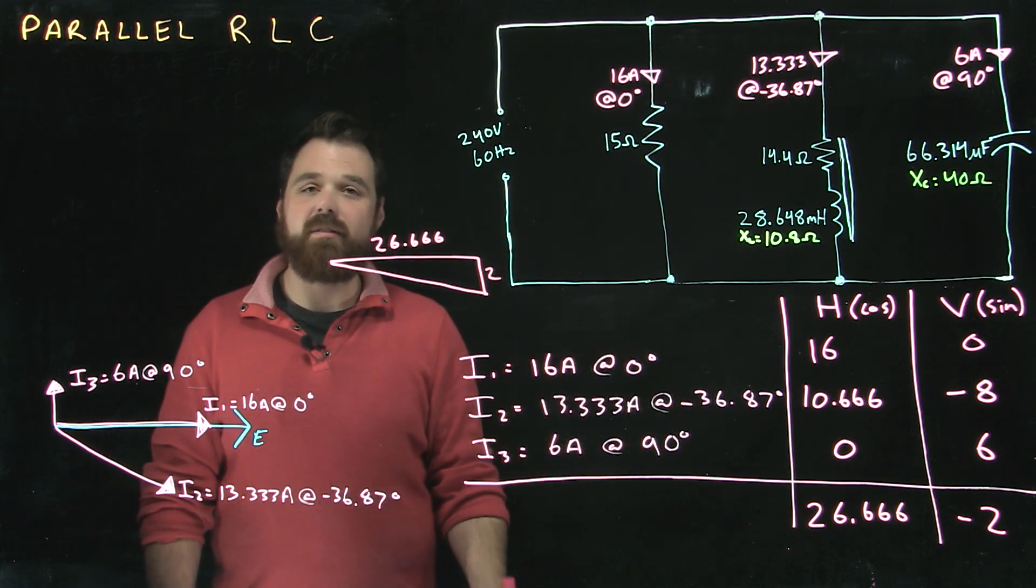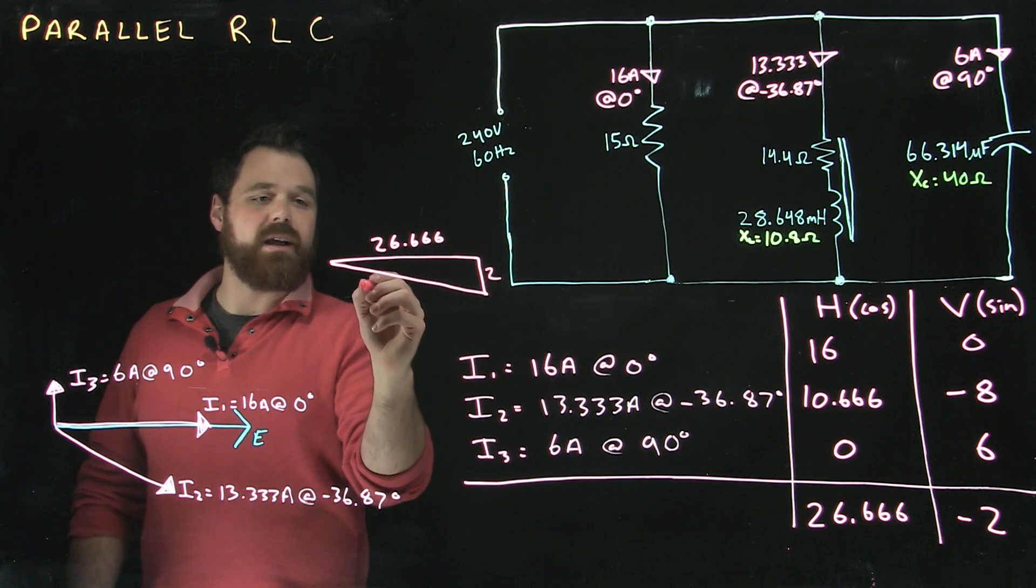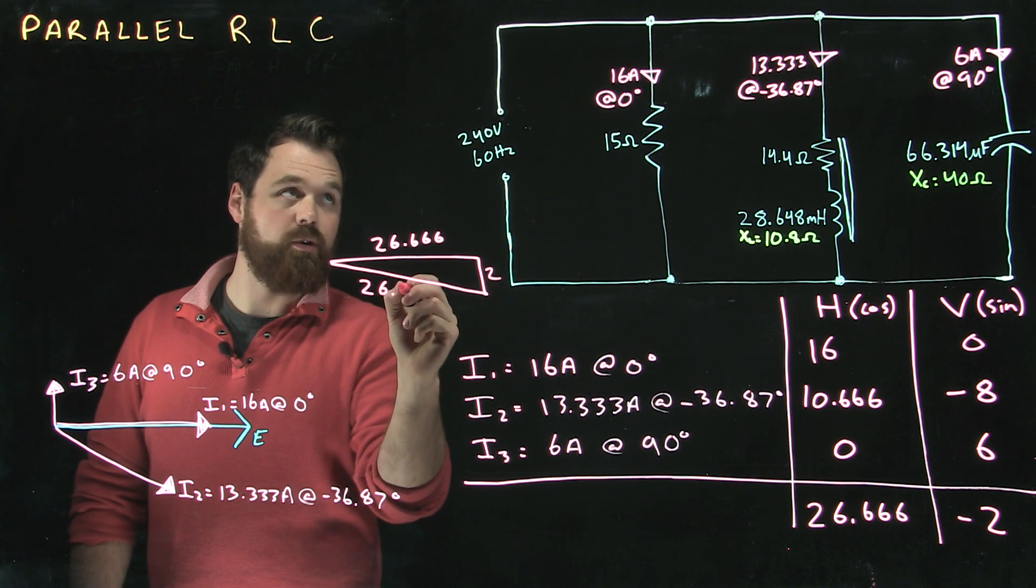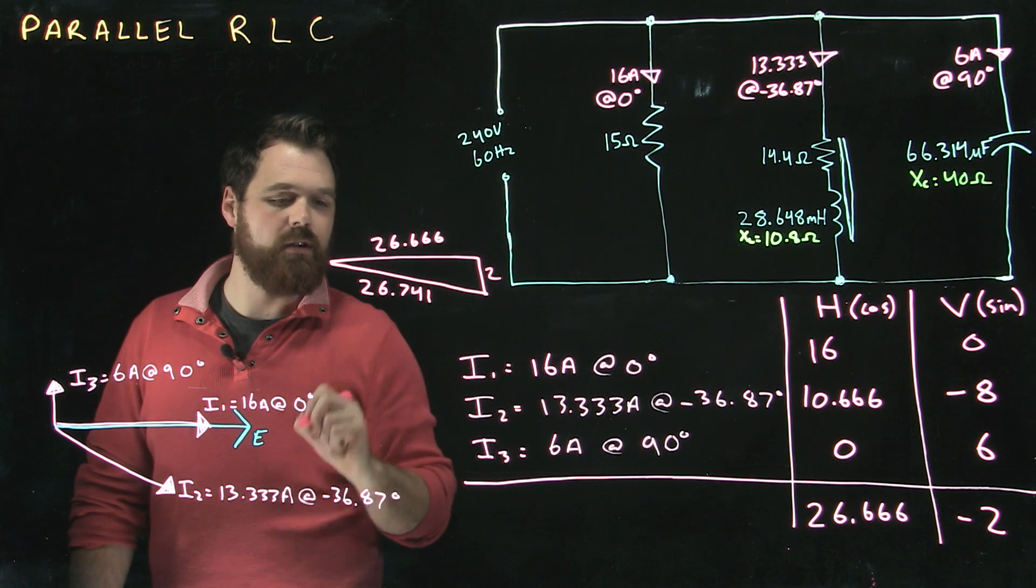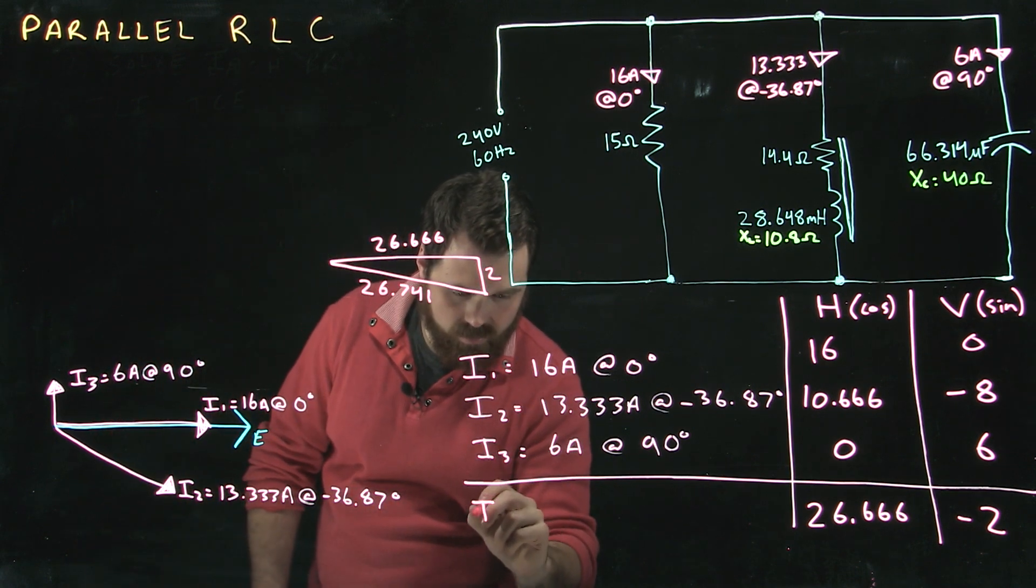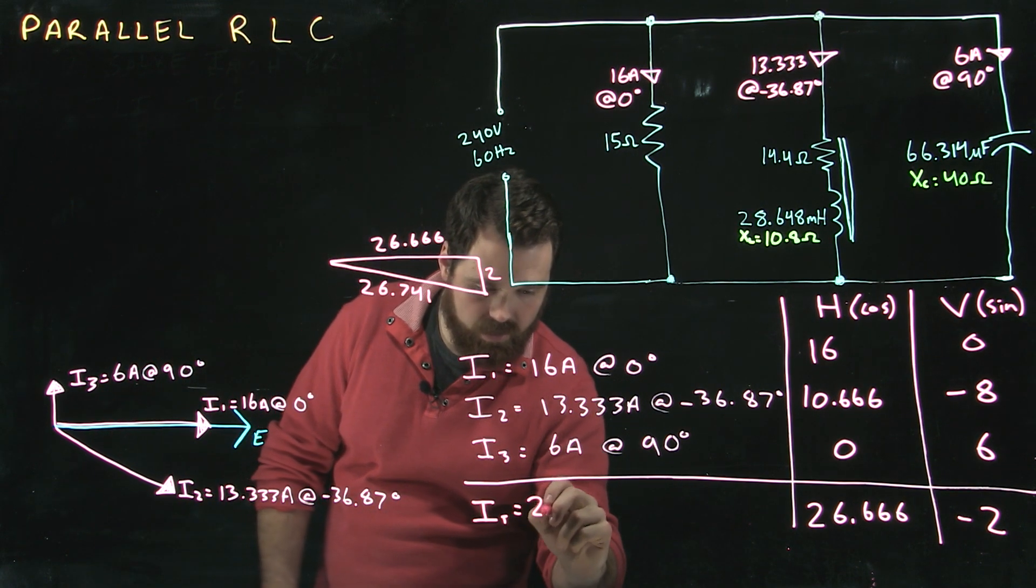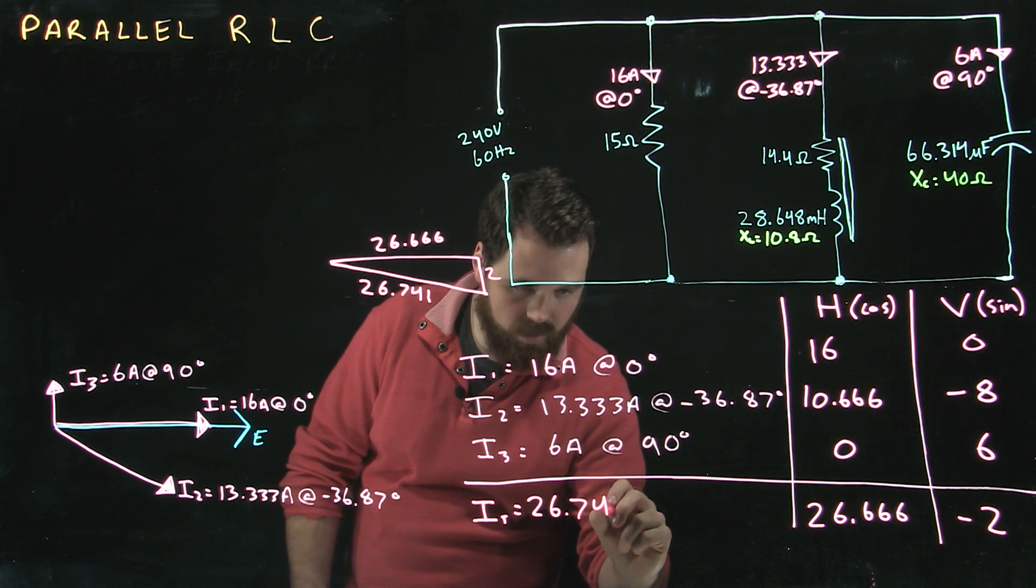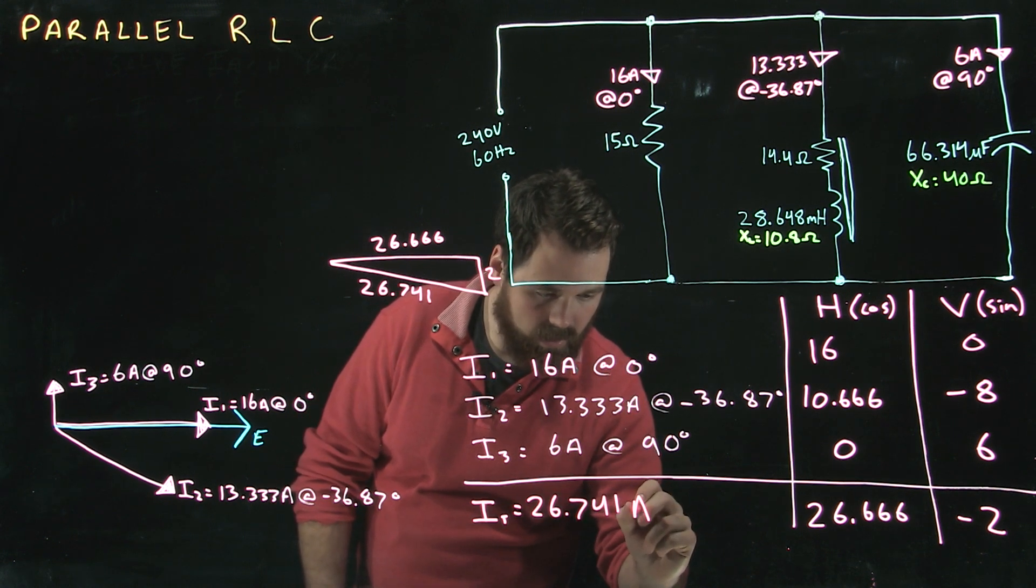We can use Pythagorean's theorem and figure out our IT, which would be right here, it's 26.741. So we have IT equals 26.741 amps.